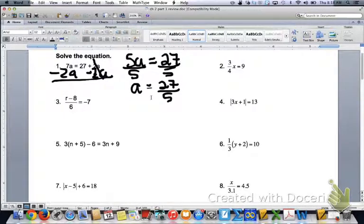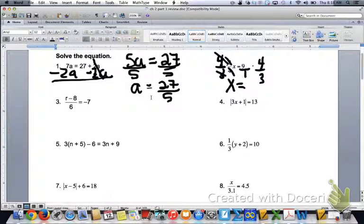Number two, when you have a fraction, you can get rid of that fraction by multiplying by the reciprocal. So if you multiply both sides by 4 thirds, the 4s cancel, the 3s cancel, you have x, and then I have 9 over 1 times 4 thirds, 9 times 4 is 36, 1 times 3 is 3, 36 divided by 3 is 12. So x equals 12.